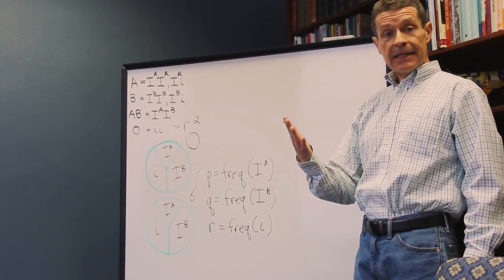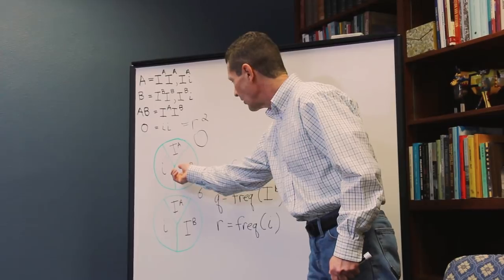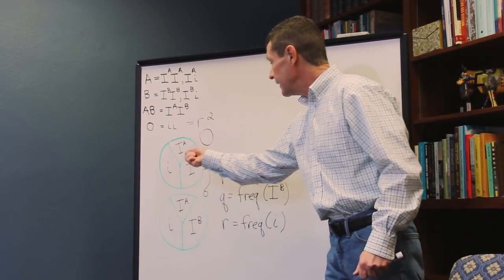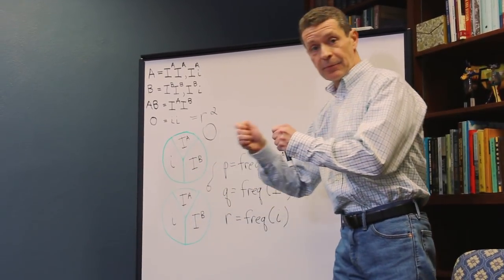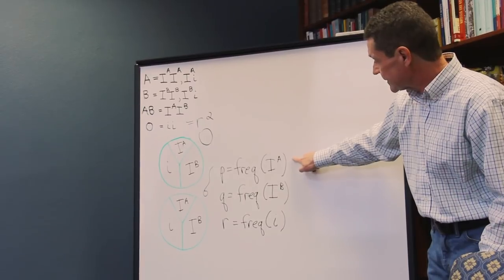What about AB? So, to get an AB offspring, you have to pull, well, there's two ways to do it. I could pull an IB egg and an IA sperm. Let's see, IA has frequency P, IB has frequency Q, so that combination is PQ.